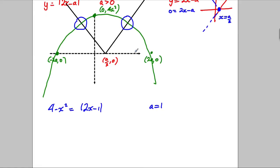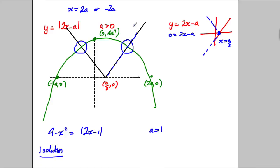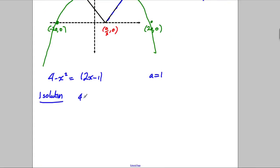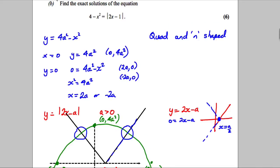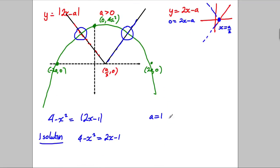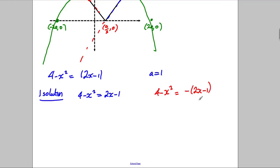And the first solution is at this point. It's where this part of the graph equals this graph. Now, this part of the graph is just the normal 2x subtract 1 graph. So, this is where 4 subtract x squared equals 2x subtract 1. And the other solution is going to be here, with this part of the graph. That's the negative of 2x subtract 1. So, that's when the 4 subtract x squared graph equals the negative of 2x subtract 1. Because it's the 2x subtract 1 graph made negative, so it's flipped it. So, we're going to have two solutions, one from each of these.